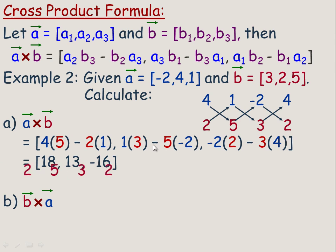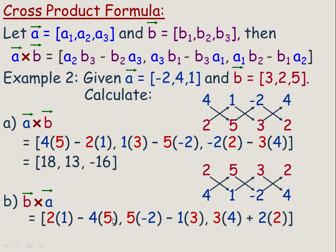To do b cross a, the only difference is the 2, 5, 3, 2 is on top and the 4, 1, negative 2, 4 is on the bottom. So you go 2 times 1 minus 4 times 5, that's the x. 5 times negative 2 minus 1 times 3, and then 3 times 4 minus negative 2 times 2. Notice that works out to be the exact opposite of that vector. Just like in the previous page, when you change the order, one was up and one was down. If you change the order of the cross product, the only thing it does is change the signs of all your components. They're exact opposites.